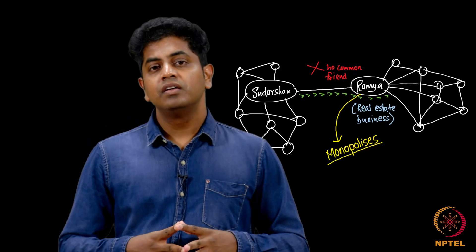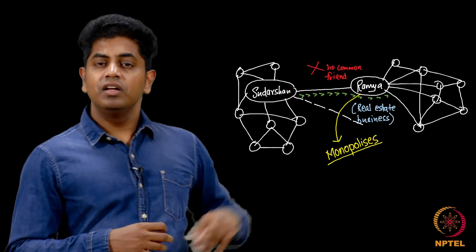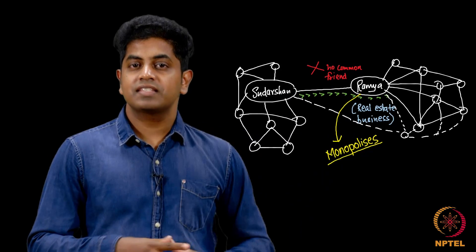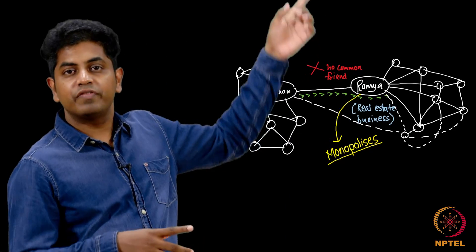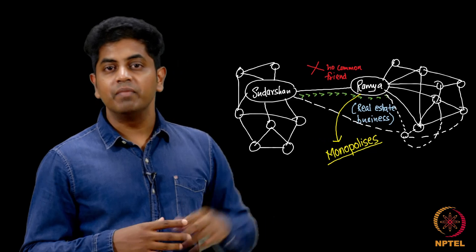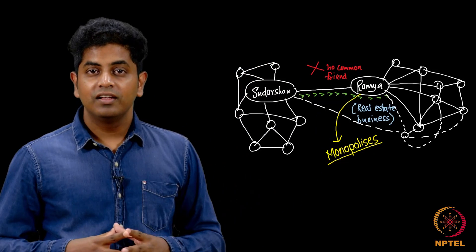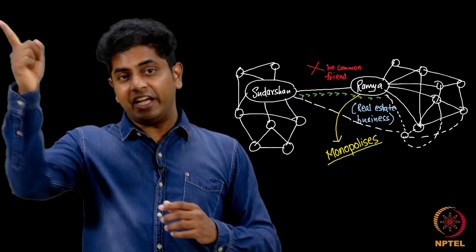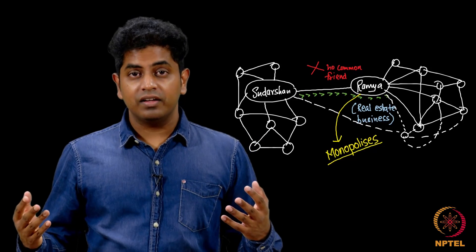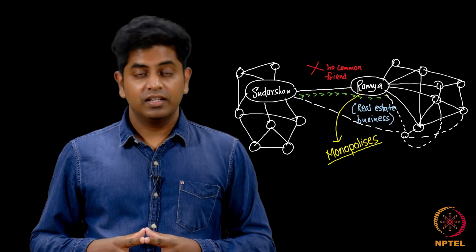Imagine we had a common friend. Maybe that common friend is common because he is slightly on the other community side. You see here is a common friend, a new node between me and Ramya, and that fellow is also friends with people from the other community. Maybe through him I can reach some other real estate agent.